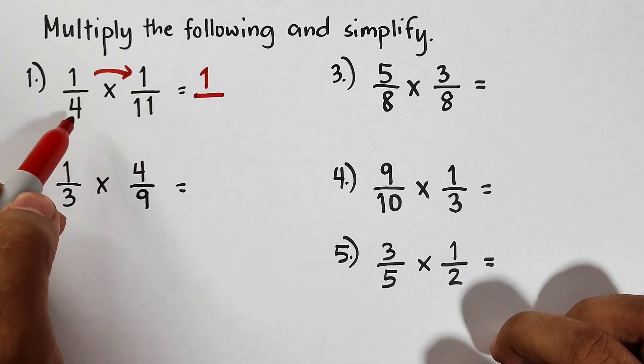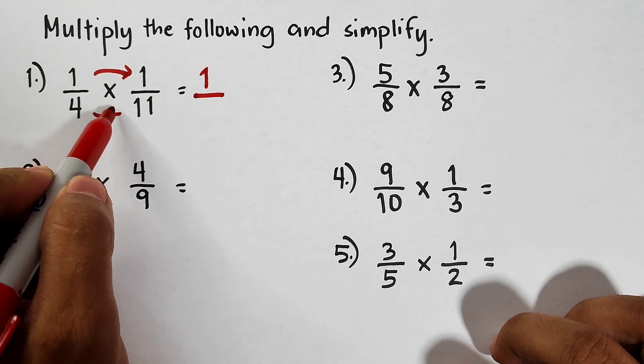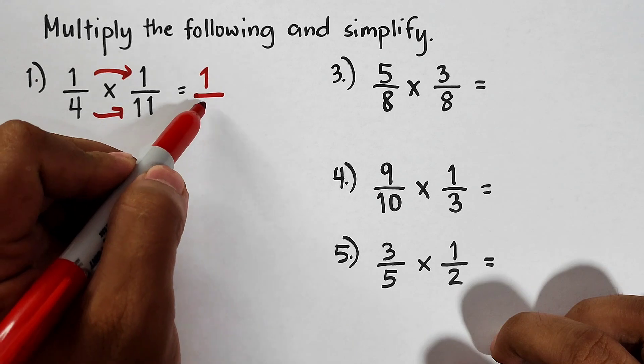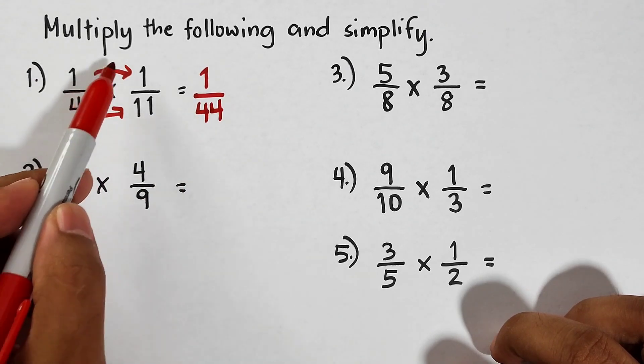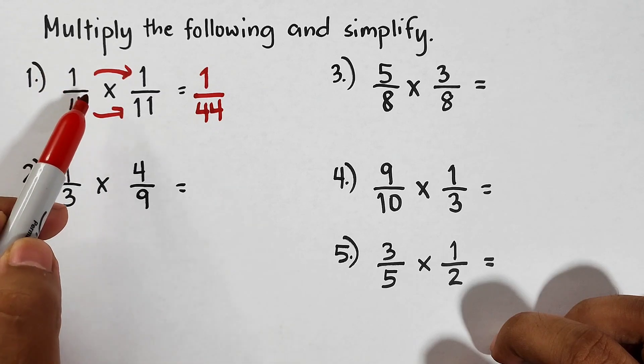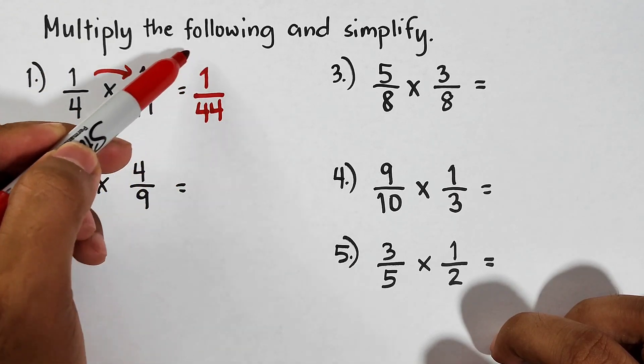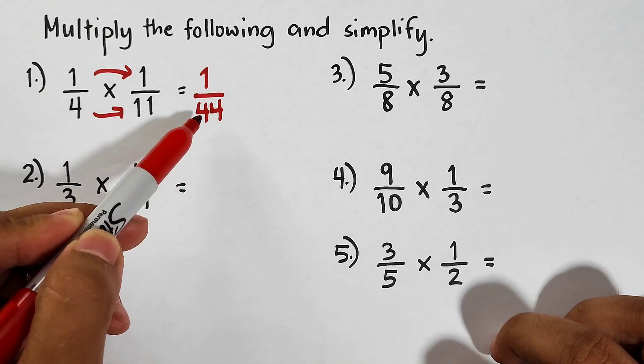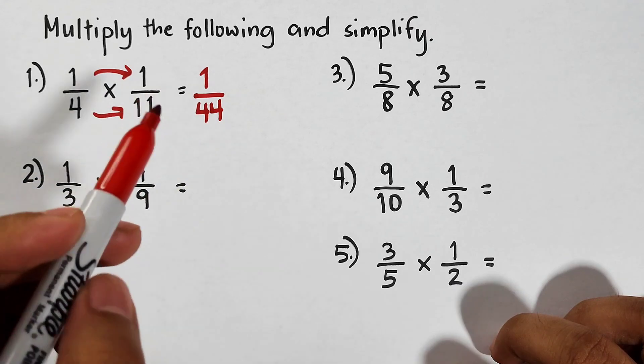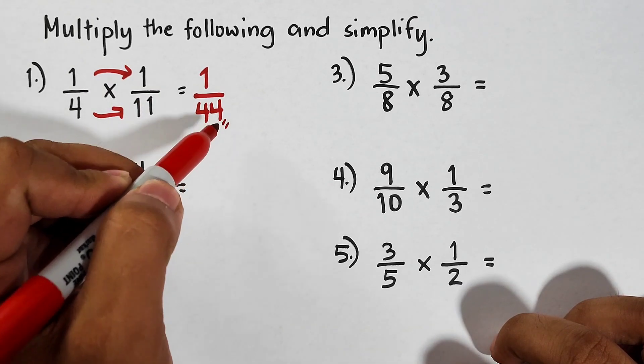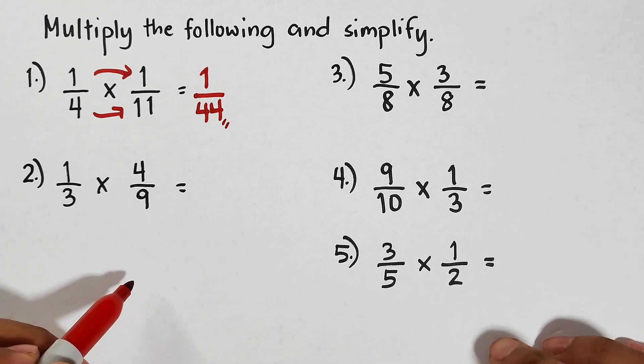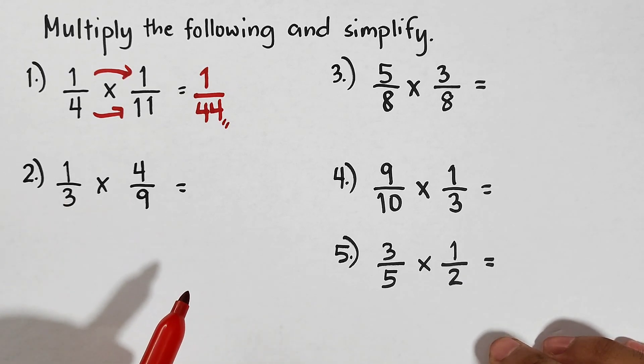Over your denominators, 4 times 11, that would be 44. Again, after multiplying the denominators and the numerators, what you need to do is check if we can still simplify or express the product in lowest terms. So here, 1/44 is already in simplified form. Now let's continue with item number two.